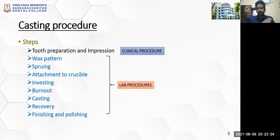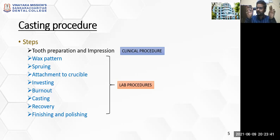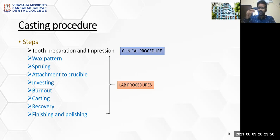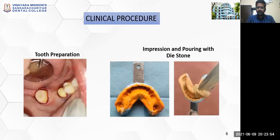Once the metal solidifies, we remove it — it will come in the shape of the wax pattern we gave. Once recovered and solidified, we finish and polish it. These are the laboratory procedures we will be examining.